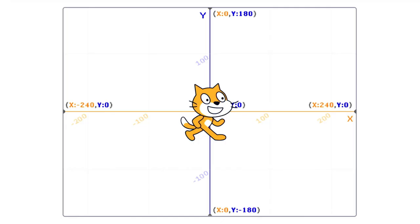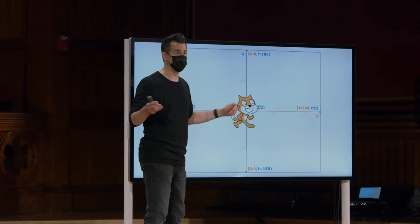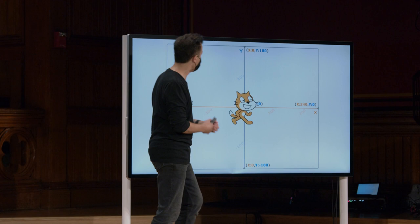Dentro do mundo do Scratch, você pode pensar nele como um sistema de coordenadas familiar, como X e Y, o que é útil quando chega a hora de posicionar as coisas na tela. No momento, o Scratch está no padrão 0, 0, onde X é igual a 0 e Y é igual a 0.